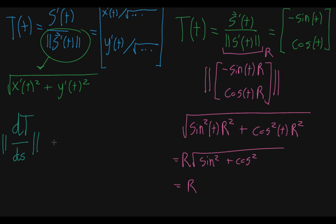The way to do this is to take the derivative with respect to the parameter t, so dT/dt, and then divide it by the derivative of our function s with respect to t, which we already found.